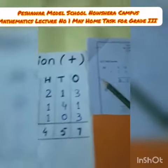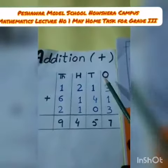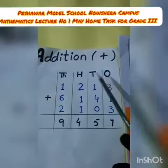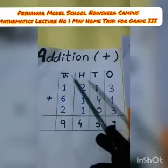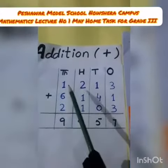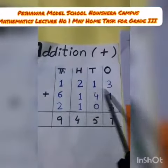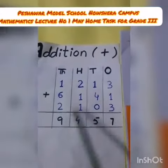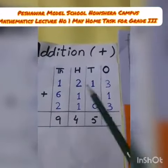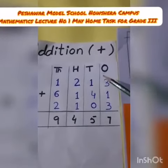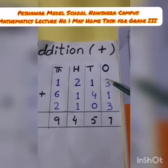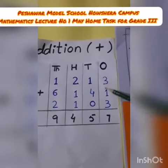Look here. We have four-digit numbers — ones, tens, hundreds, thousands. And we have three numbers. You can solve it using the vertical method.